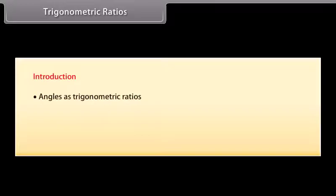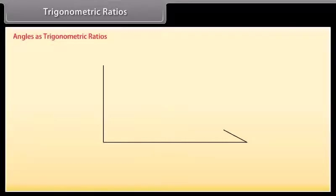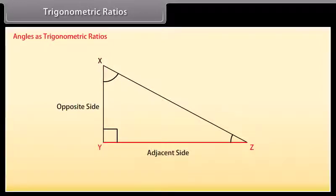Let us begin our introduction to trigonometry with trigonometric ratios. We will express angles as trigonometric ratios, compare trigonometric ratios of similar triangles, and solve examples. Look at triangle XYZ, right-angled at Y. Angles X and Z are both acute. XY is the side opposite to angle Z, YZ is the side adjacent to angle Z, and XZ is the hypotenuse.